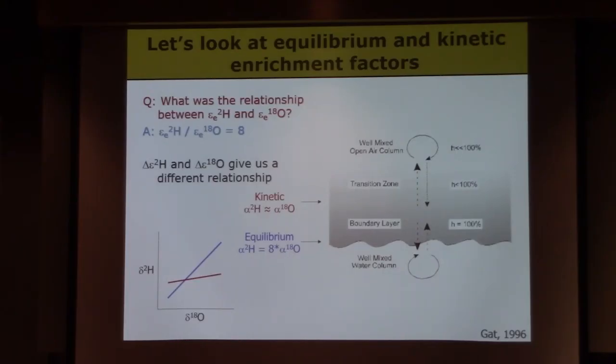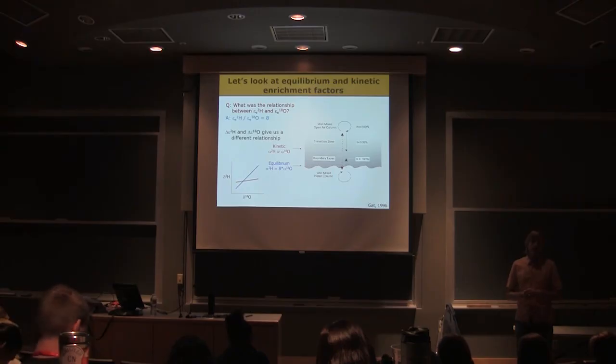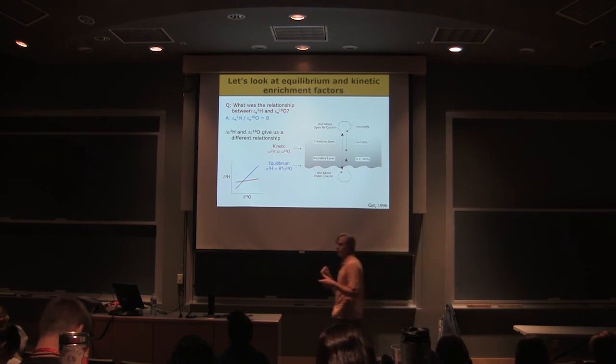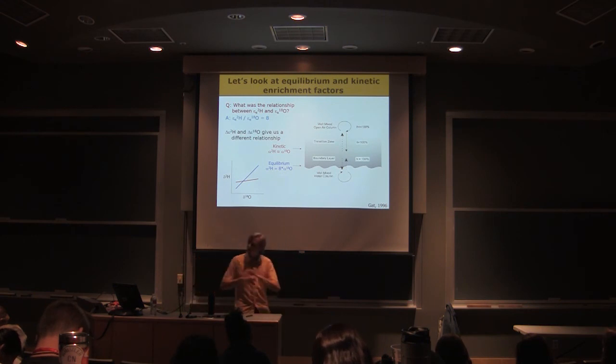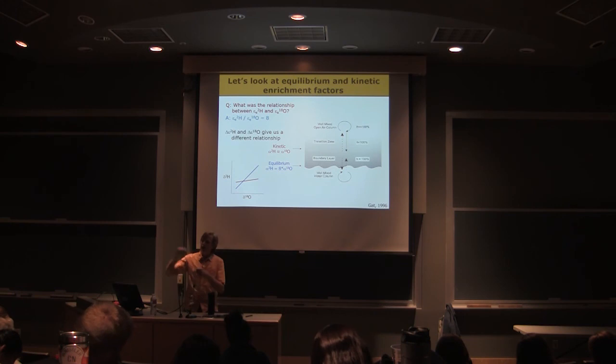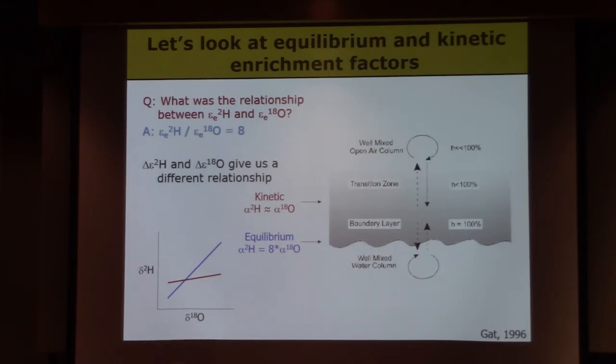However, if we look at the kinetic relationship, what we see is that kinetic fractionation gives us a different relationship between hydrogen and oxygen. In fact, it's about a one to one relationship. Kinetic fractionation during the diffusion of water molecules discriminates for hydrogen isotopes about the same amount as it does for oxygen. It's actually slightly larger for oxygen isotopes than hydrogen isotopes. So if we had a purely kinetic process and we looked at how that affected isotope ratios of water and we plotted up our data in hydrogen-oxygen space, we'd expect to see the red line, a one to one relationship.